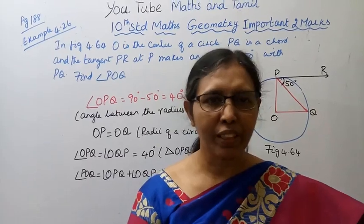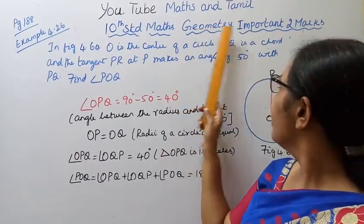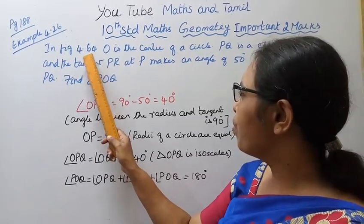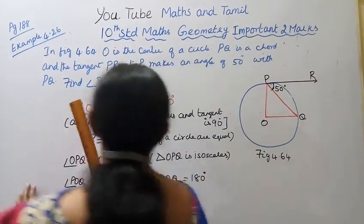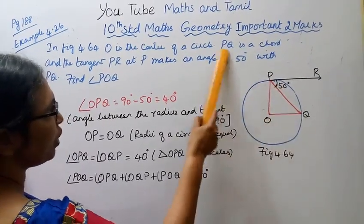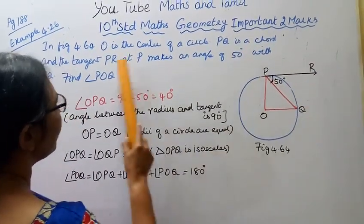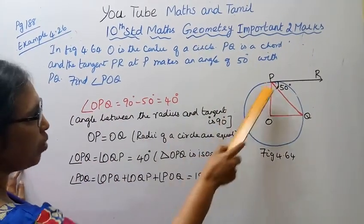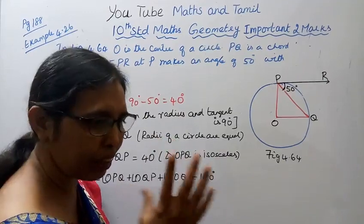Hello students, welcome to Max and Tamil channel. 10th grade geometry, important two marks, page 188, example 4.26, figure 4.64. O is the center of the circle. PQ is a chord, and the tangent at the end of chord PQ — tangent PR at P — makes an angle of 50 degrees with PQ. Find angle POQ.